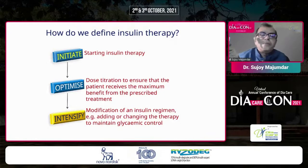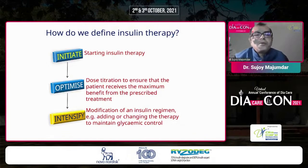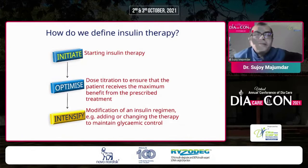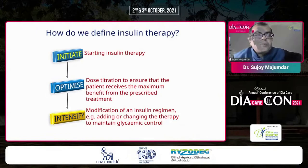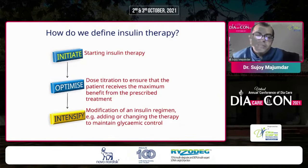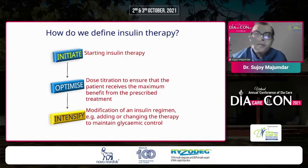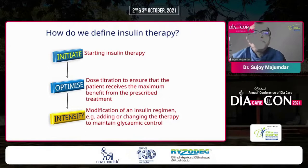How do we define insulin therapy? We initiate as taught, then optimize by dose titrating to ensure the patient receives maximum benefit. We up-titrate or down-titrate the insulin dose. Even after that, glycemic control may not be well-maintained — for example, with basal insulin, fasting plasma glucose is controlled quickly, but post-prandial glucose may not be. That's where intensification comes in: adding or changing the regimen, moving from basal to premixed or basal-bolus.